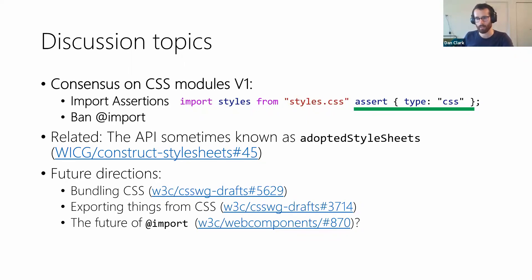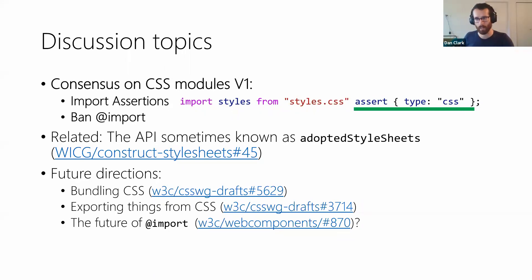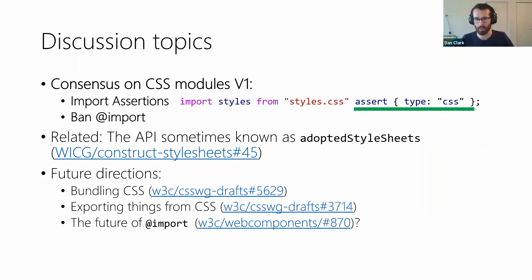As time permits, we could talk about some future directions for CSS modules, in terms of a recent proposal from Justin about bundling multiple style sheets into the same file, ideas about adding named exports from CSS modules, and maybe spending more time on this @imports question beyond just banning the feature as I'm suggesting we do in v1. So with that, I think we can go to the queue. Any folks that would have concerns or objections to this v1 of CSS modules — it'd be great to hear from you.